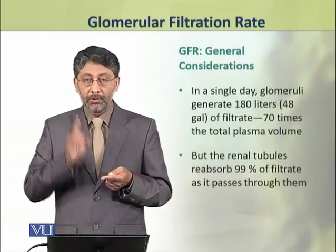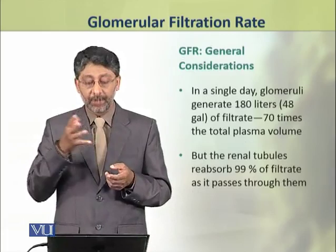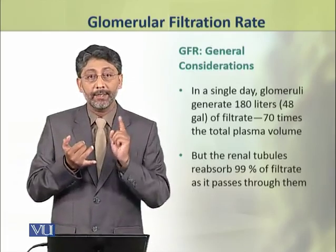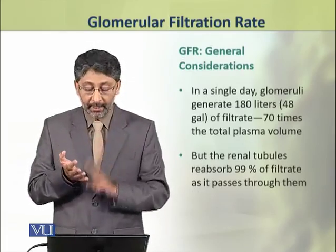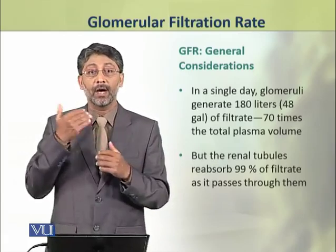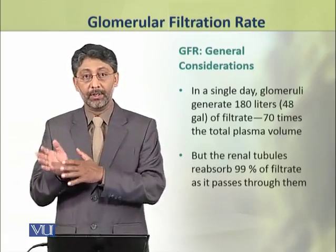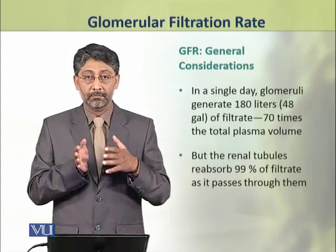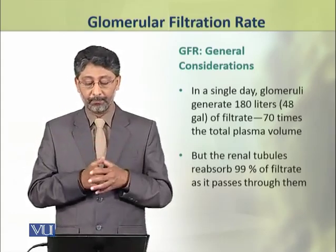The glomerular filtration rate is about 180 liters — that is 48 gallons of filtrate — which is 70 times more than the total blood plasma volume.